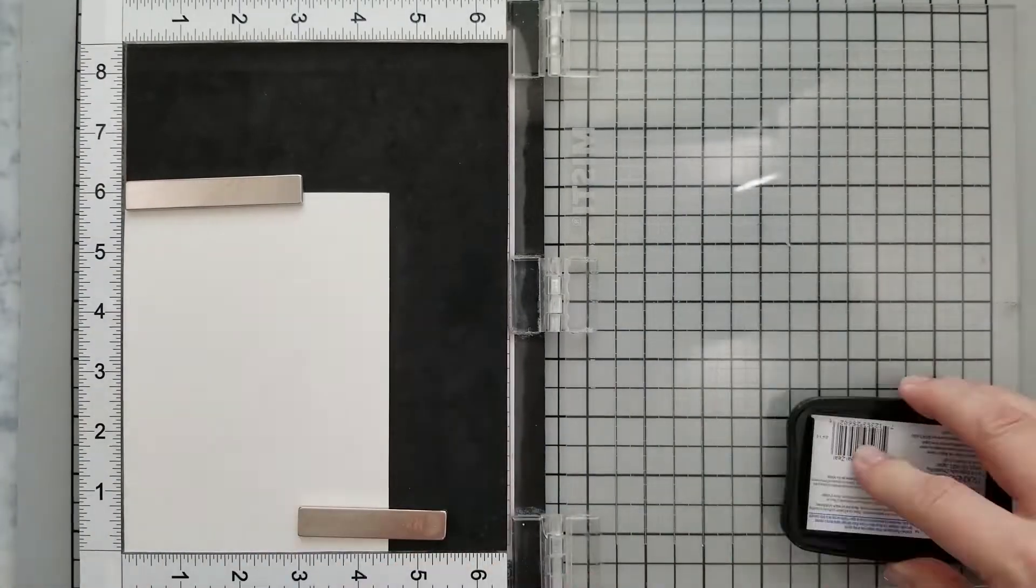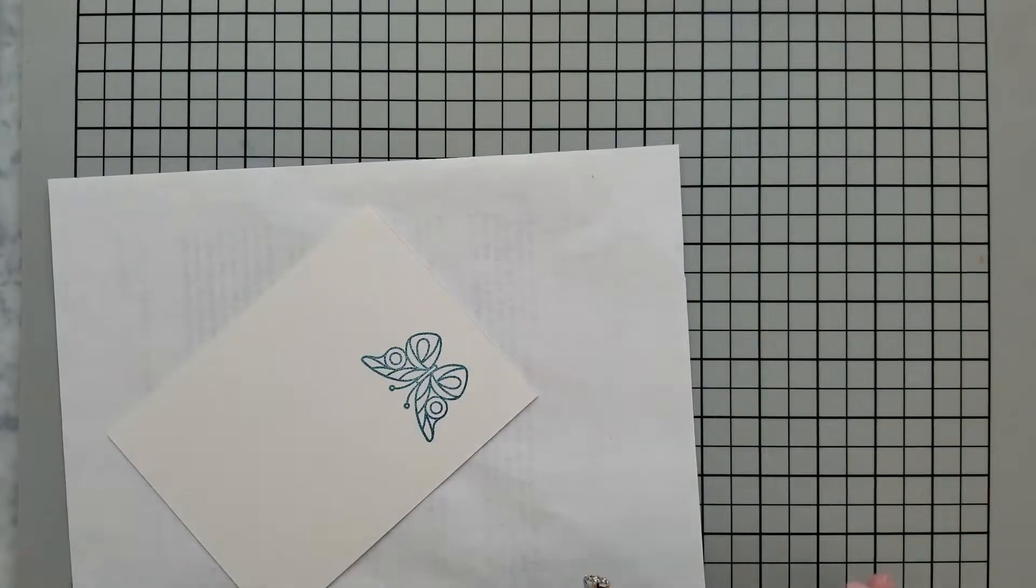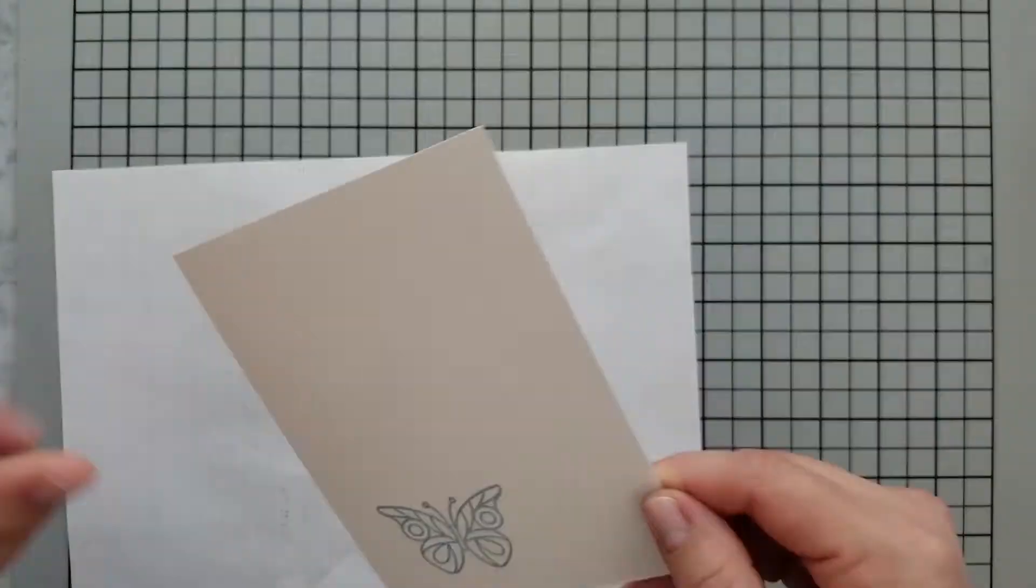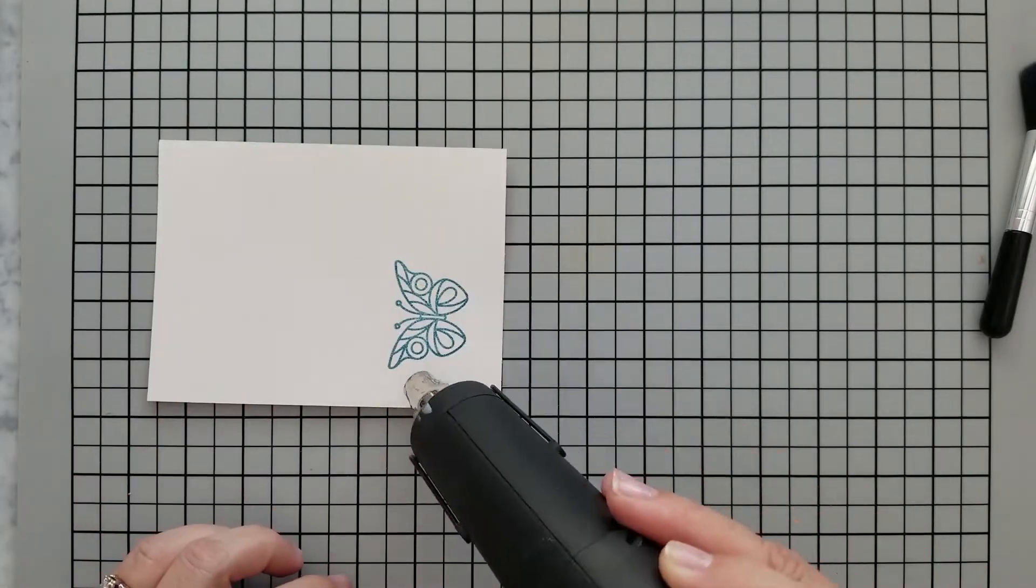We're going to repeat all of that again to stamp our butterfly. We're stamping on watercolor paper again, first with Versamark ink and then over with Teal Zeal ink, covered it with clear embossing powder, did a little cleanup for any excess powder left behind, and then heat set it.